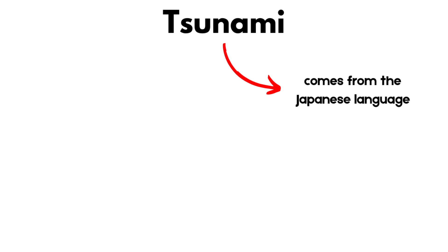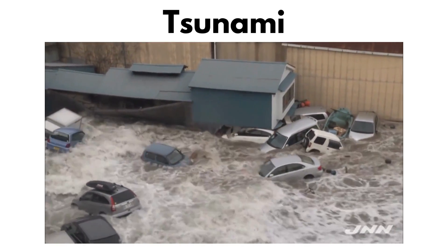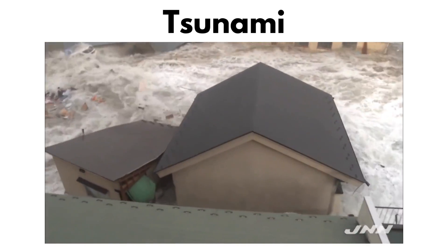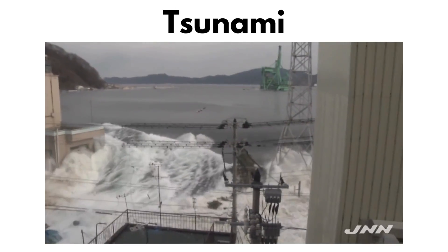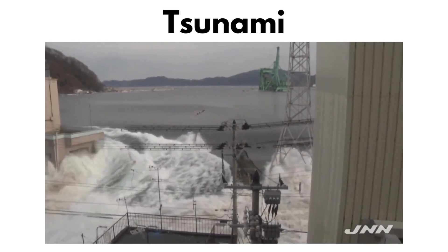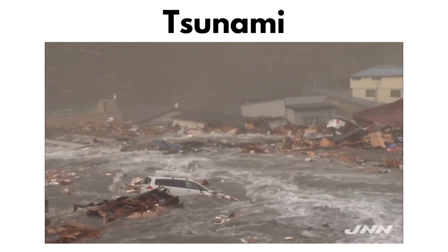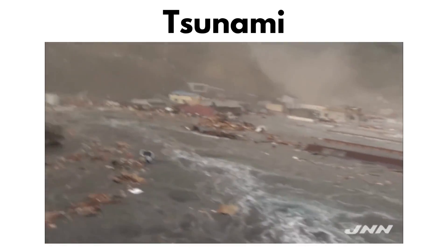Tsunami. The term tsunami comes from the Japanese language, meaning harbor wave. It is a phenomenon that occurs in the ocean or other bodies of water and is triggered by seismic disturbances, such as underwater earthquakes, submarine volcanic eruptions, underwater landslides, or meteorite impacts. When a seismic disturbance occurs beneath the ocean, the energy released causes a vertical displacement of water, forming a series of long and high amplitude waves known as tsunami waves.